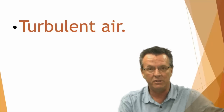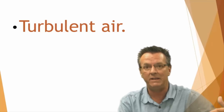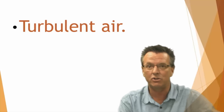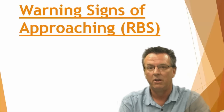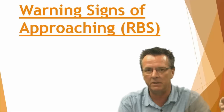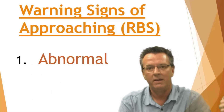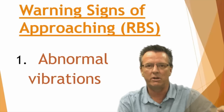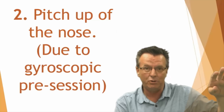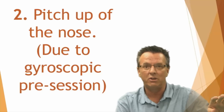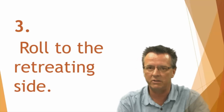So you have VNE, and then these other five factors lower that VNE and can cause you to get into retreating blade stall at a slower speed than VNE. You're going to have to know what happens at the onset of retreating blade stall. Three things are going to happen and you have to commit these to memory. The first one is abnormal vibrations. After the abnormal vibrations, you're going to have a pitch up of the nose due to gyroscopic precession.